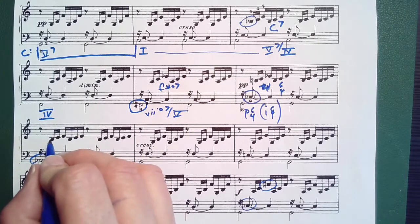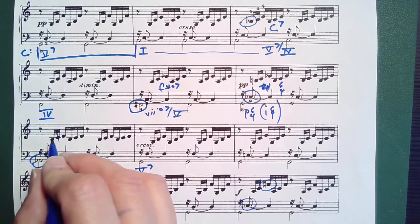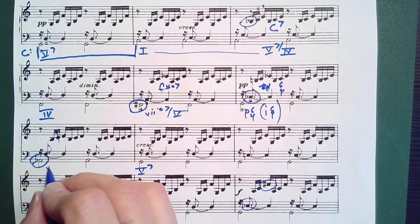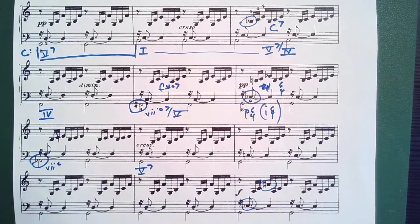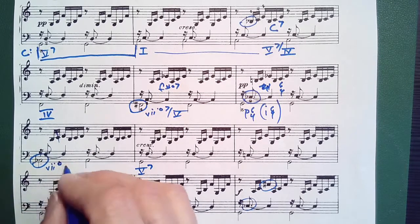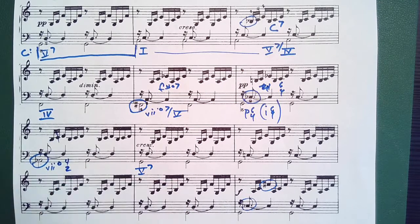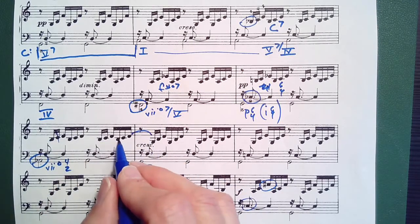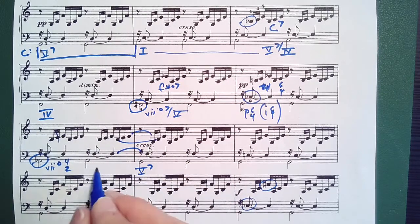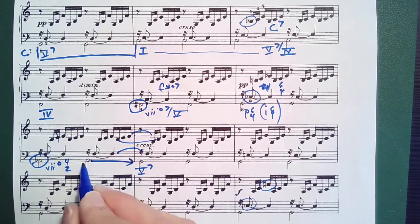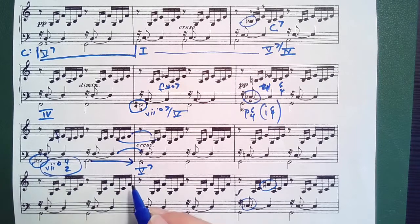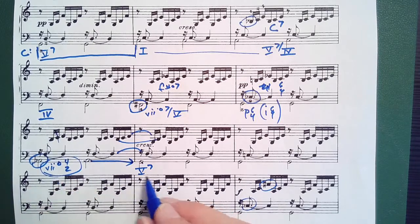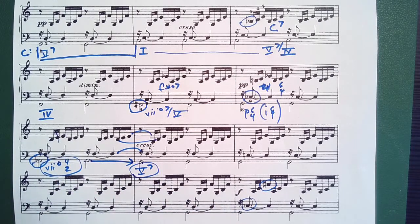And then here, B, D, F, A flat, seven diminished four two. And we can hold the D over, we can hold the B over, we can hold the F over, and simply by sliding the A flat down to G, this dominant quality diminished seventh chord becomes the V7 chord.